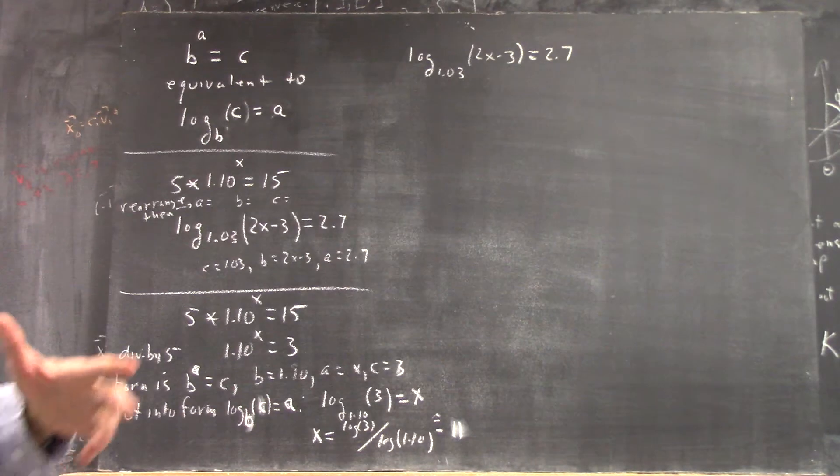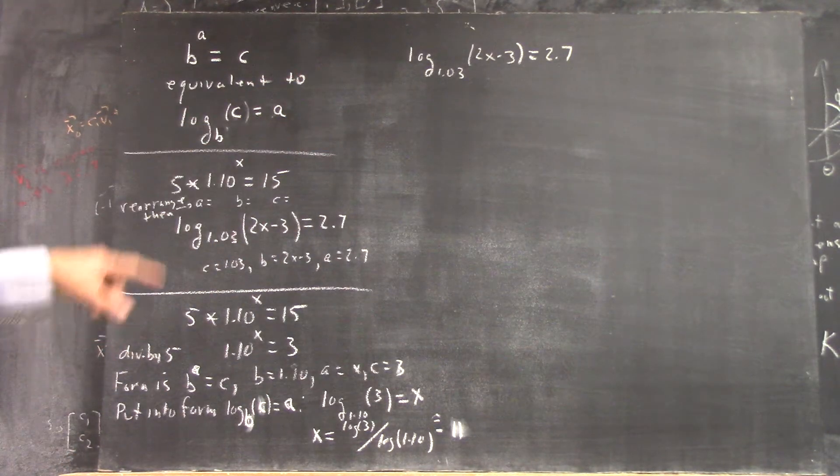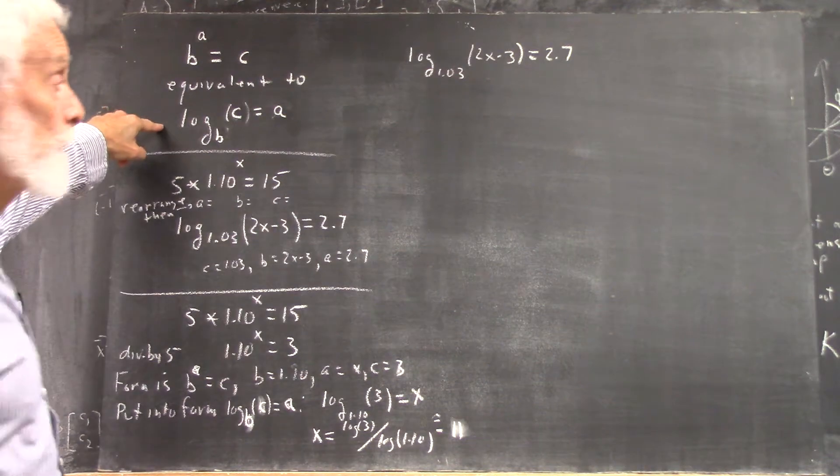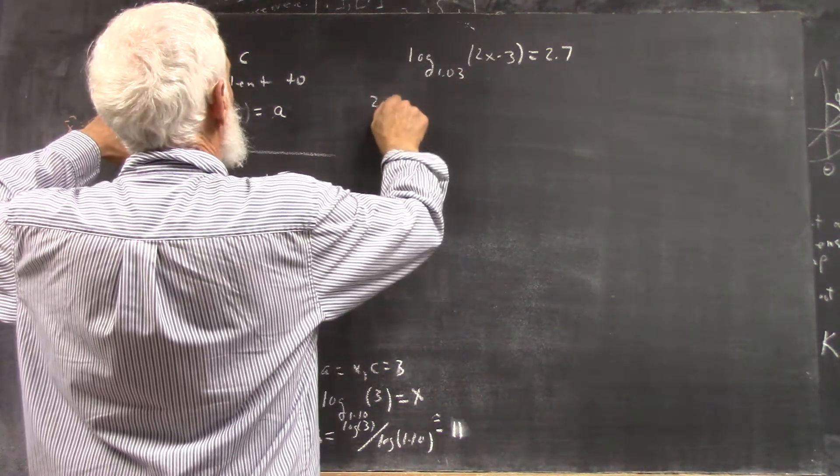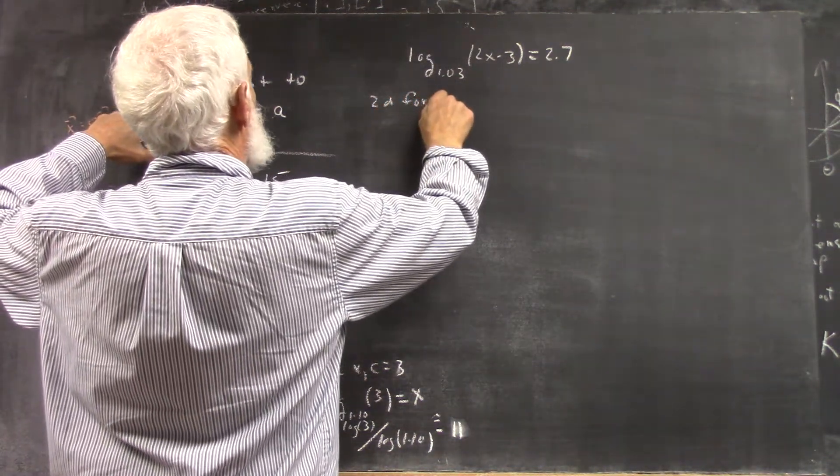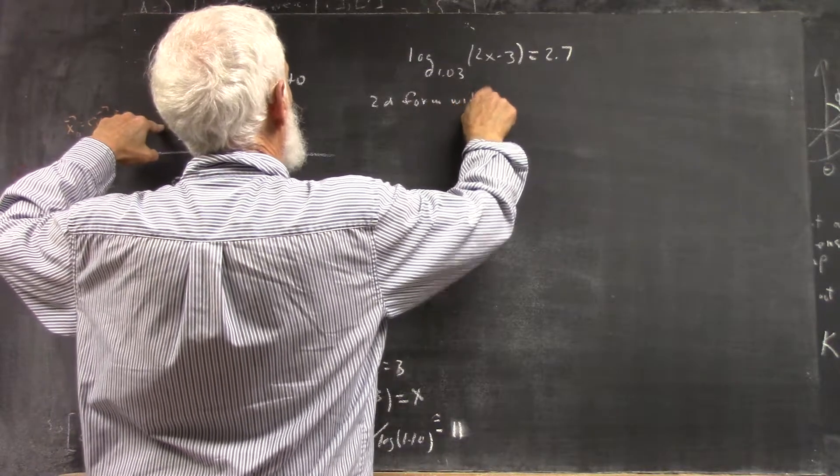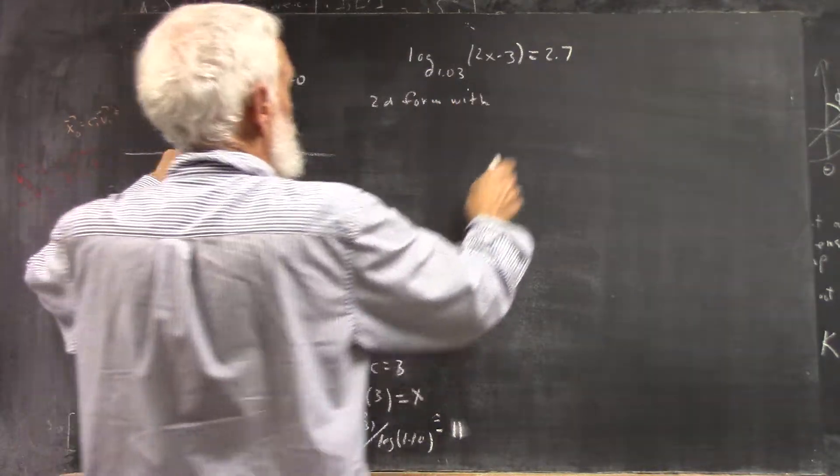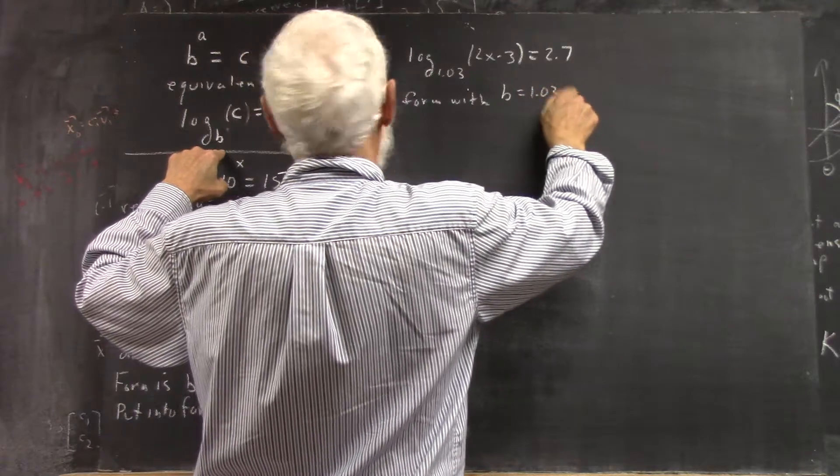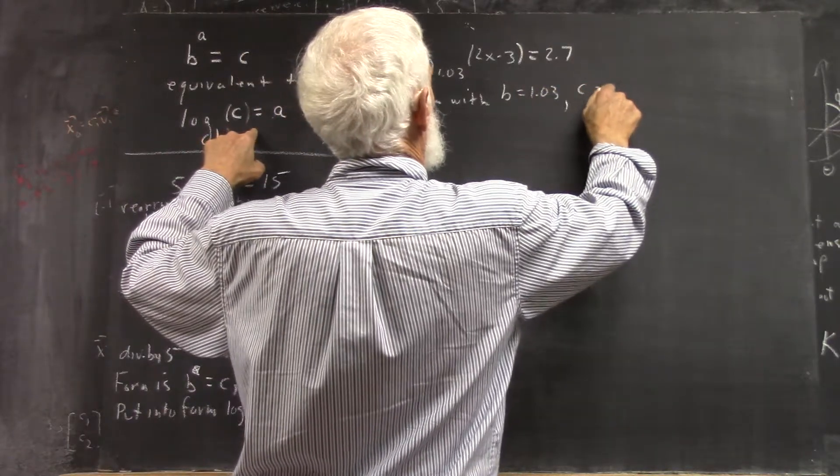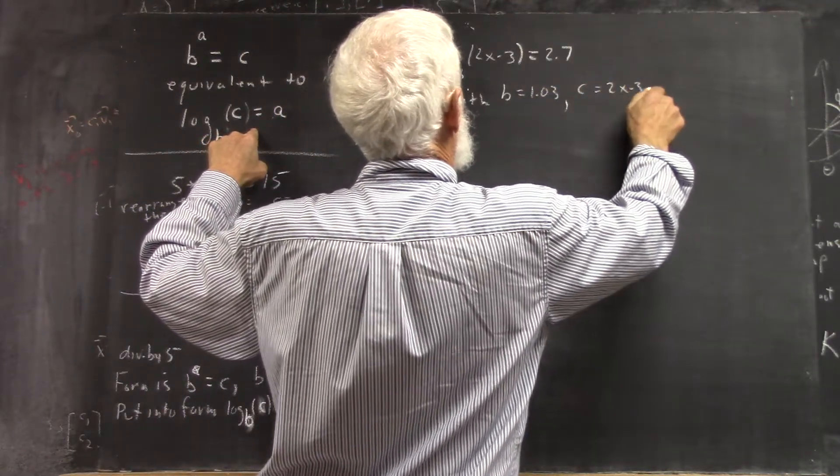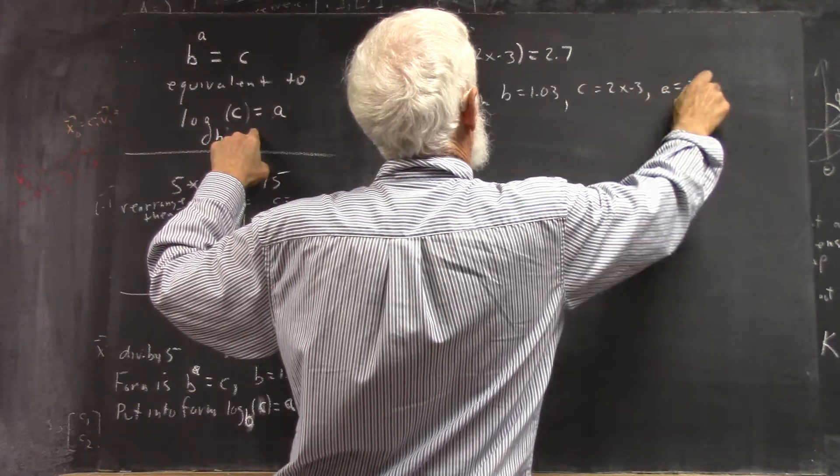Okay, but there it is. Now that is already of this form. Let's correctly identify these: b is your 1.03, c is your 2x minus 3, and a is your 2.7.